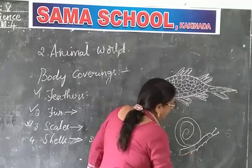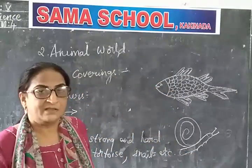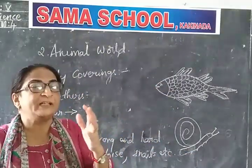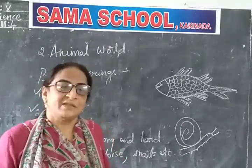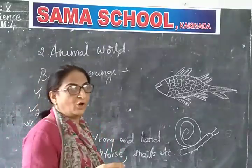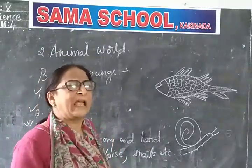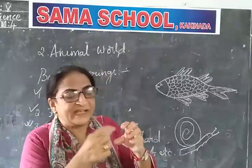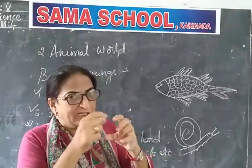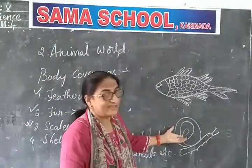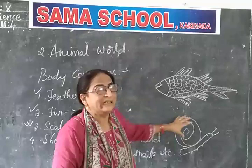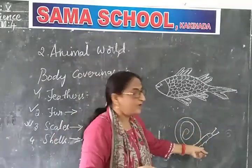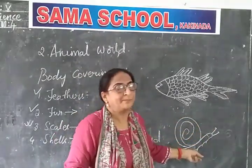When you go to the beaches, you will find different types of shells. There are oysters, clams — all these shell creatures. Inside the shell there will be a living creature. This is called the exoskeleton — the outer skeleton. This will prevent the body from any harm from their enemies.